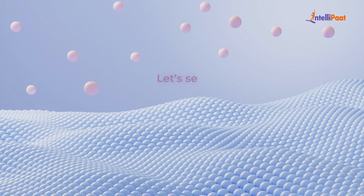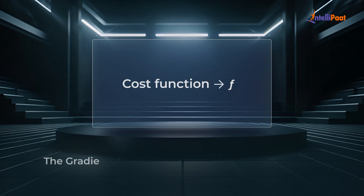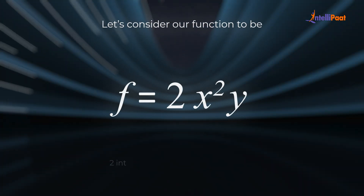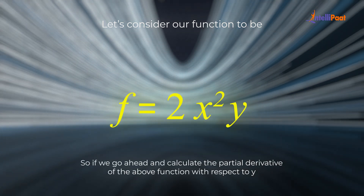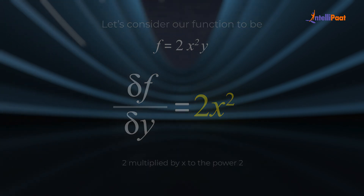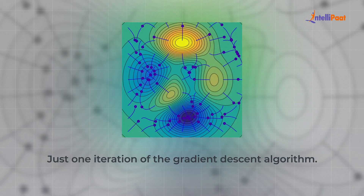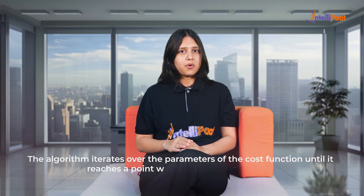Let's see how gradient descent is calculated using sample data. Say we have a cost function defined by the variable f. The gradient of this function can be calculated by the partial derivative of the function f. Let's consider our function to be 2 * x² * y. If we calculate the partial derivative with respect to y, our result would be 2 * x². But if we calculate the partial derivative with respect to x, our result would be 4 * x * y. What we did was just one iteration of the gradient descent algorithm, which iterates over the parameters of the cost function until the loss is minimum.